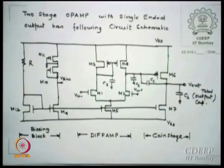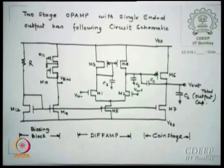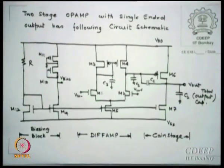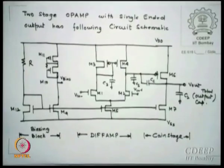You may notice that transistor number 8 is missing — counting M1, M2, M3, M4, M5, M6, M7, M9 — so M8 is somewhere to come. An additional resistance will be required and we will see where it comes.